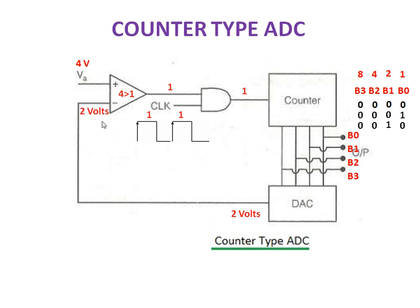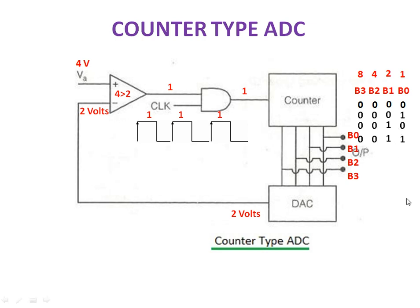This 2 volt is given as input to the comparator. 4 volt and 2 volt are compared — 4 is greater than 2 — so the comparator output will become 1. Now if I apply the third clock pulse, the AND gate produces 1 again, and the counter is incremented by 1. Totally 3 pulses, represented in digital form as 0 0 1 1. This value is given to the DAC, which produces the equivalent analog voltage of 3 volt.